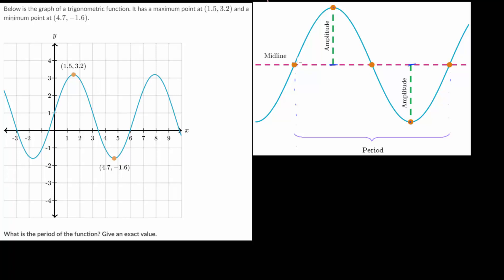So the period is just this horizontal distance that measures exactly one of these repetitions where, again, we're looking at a unique section of the curve.